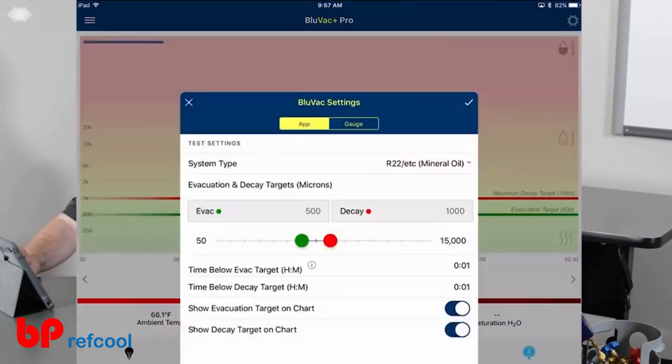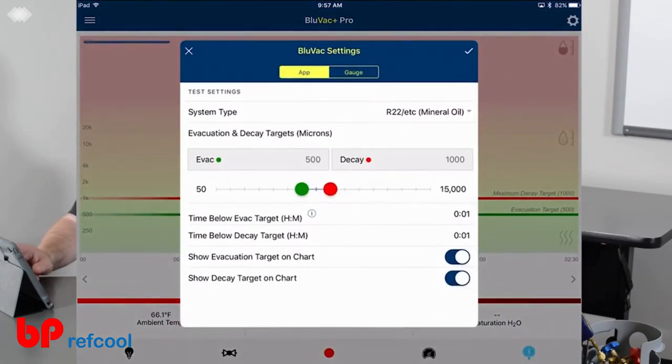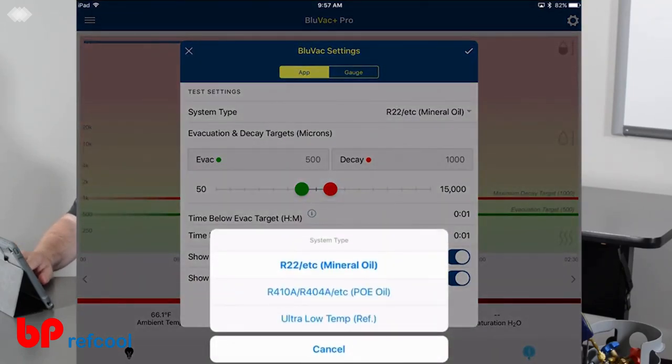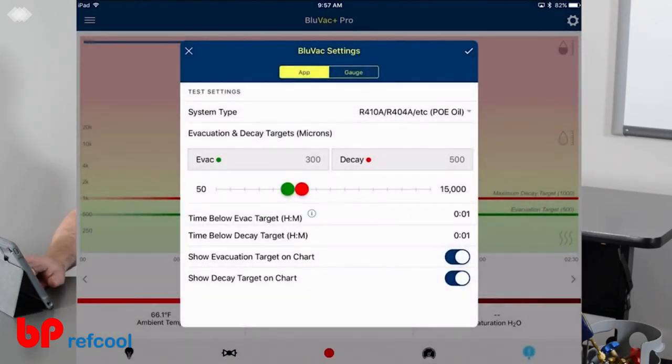I'm going to go ahead and tap the settings button for just a minute. You can see that we can select the type of system. These settings will change the depth and time of the vacuum. In this case here, if we select the POE oil, you can see it goes from 300 to 500.